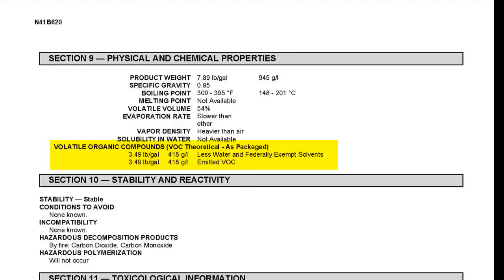If you can't find the information in this section, you may want to also check if there is a section called regulatory information, usually section 15 or 16. Another place you can look is a PDS, or a product data sheet.